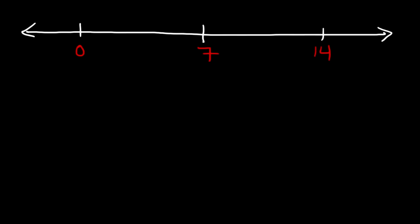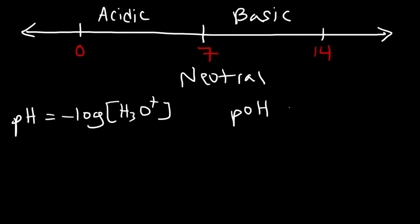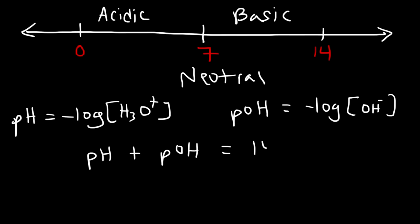Now let's talk about the pH scale. Typically in most textbooks you'll see pH go between 0 and 14, but it can go beyond those numbers. At 7 the solution is neutral; below 7 it's acidic; above 7 it's basic. To calculate pH you need the concentration of hydronium ions: pH = −log[H₃O⁺]. The pOH = −log[OH⁻], and pH + pOH always equals 14 at 25°C.